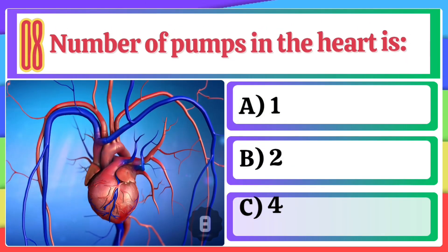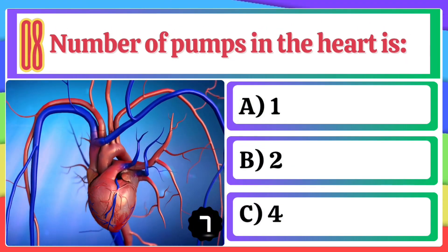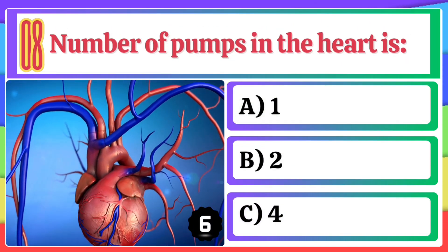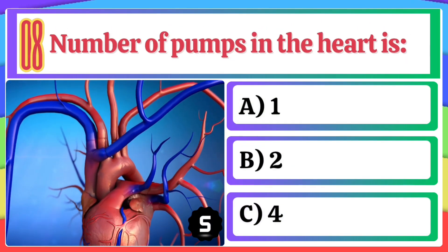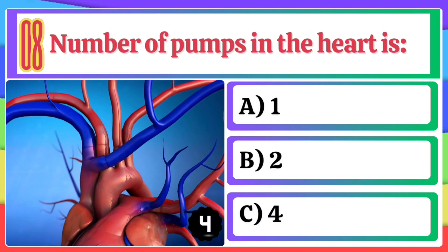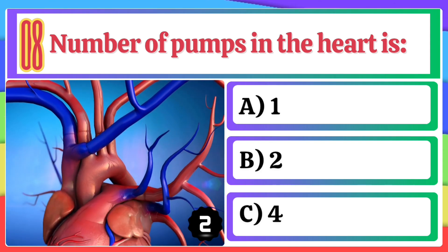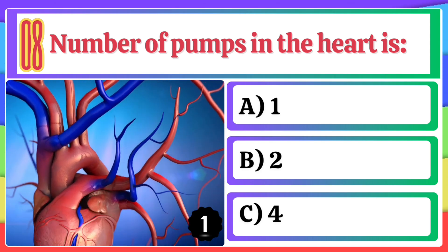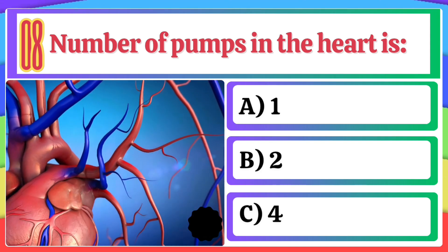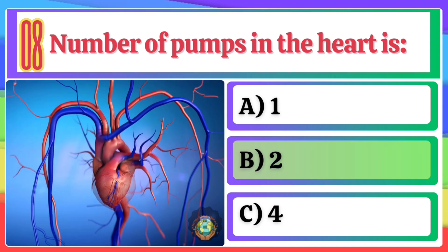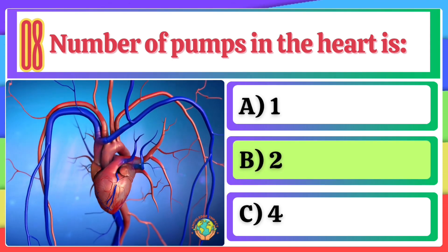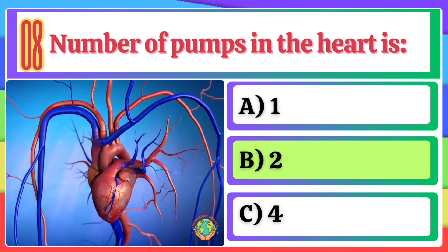Number of pumps in the heart is: A) 1, B) 2, C) 4. The correct option is B, 2.